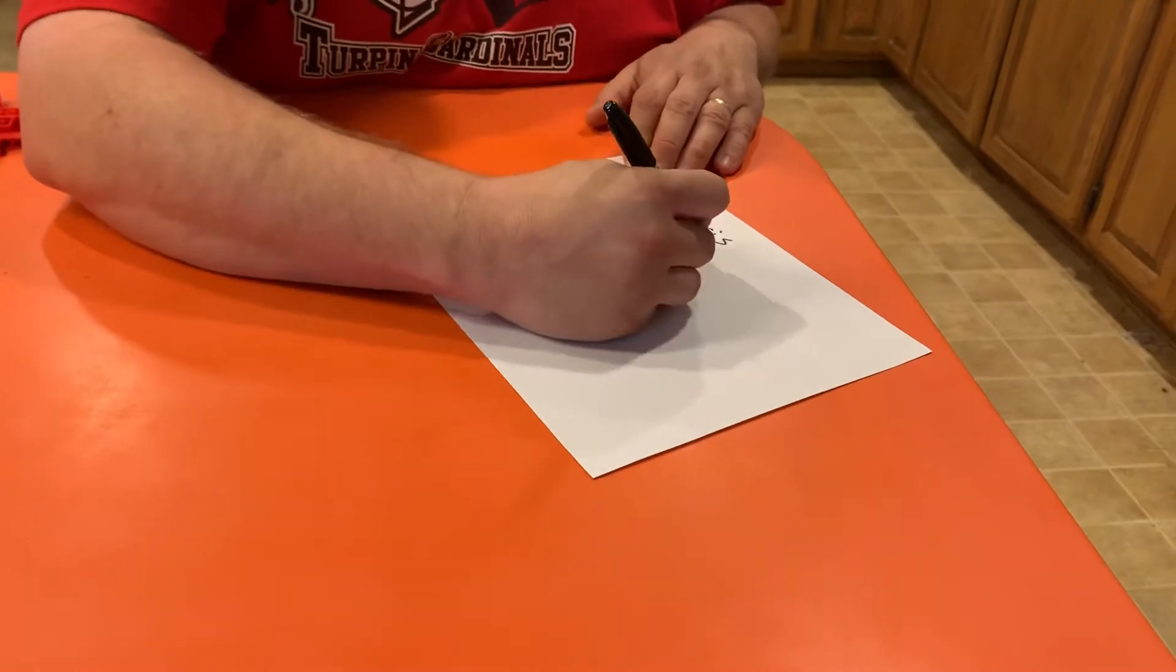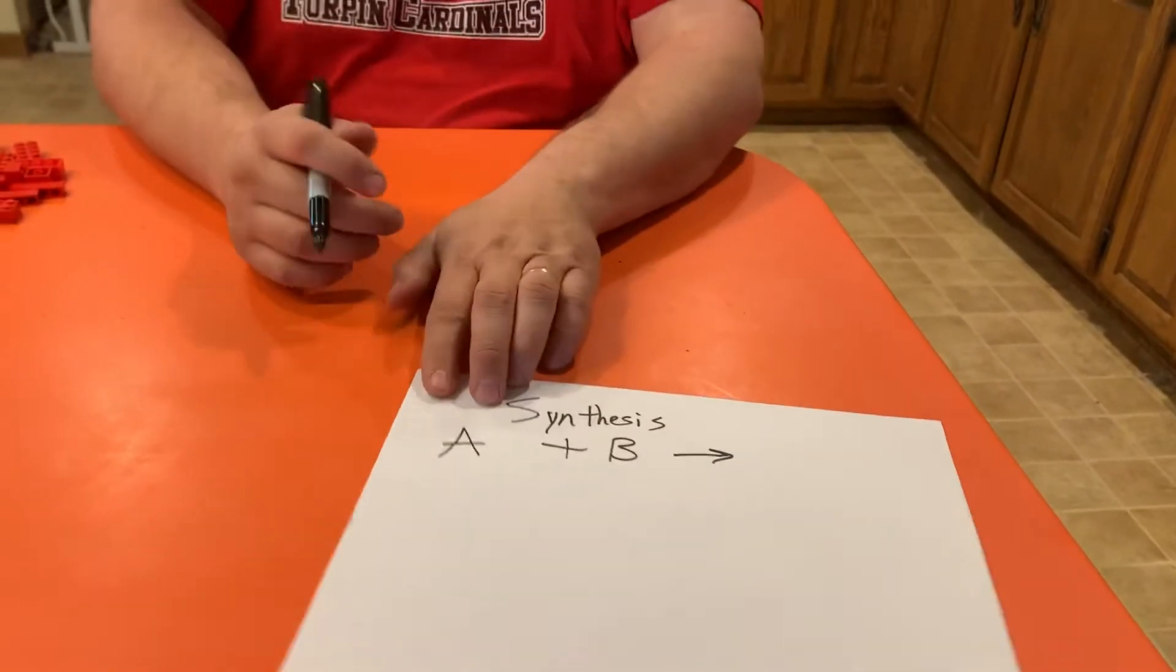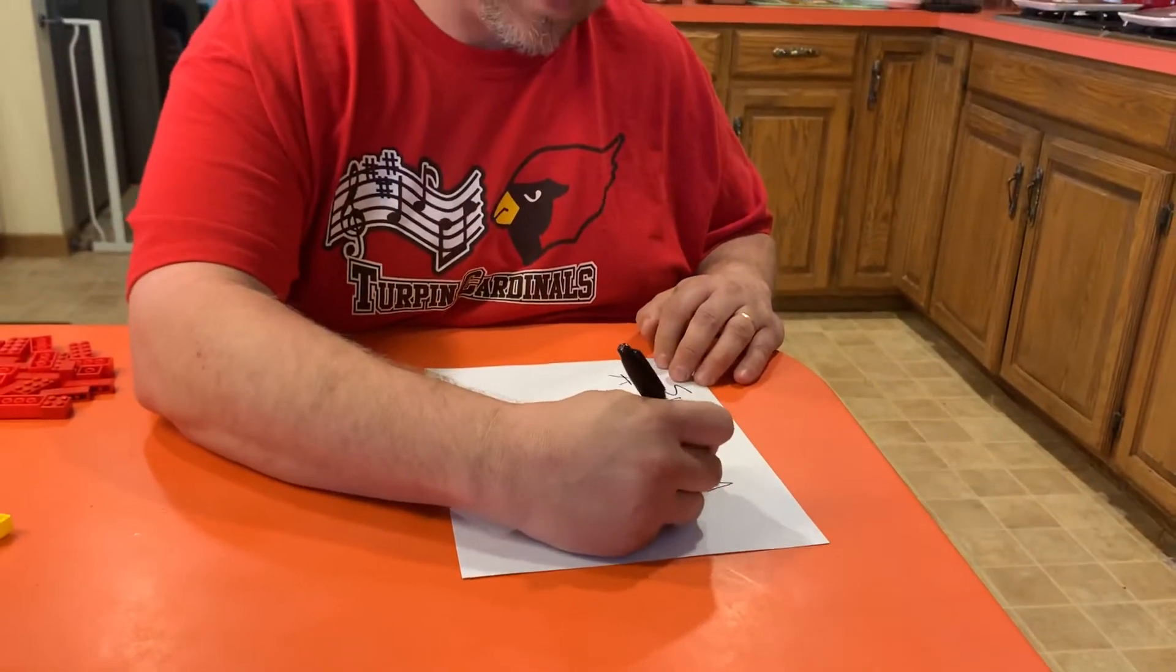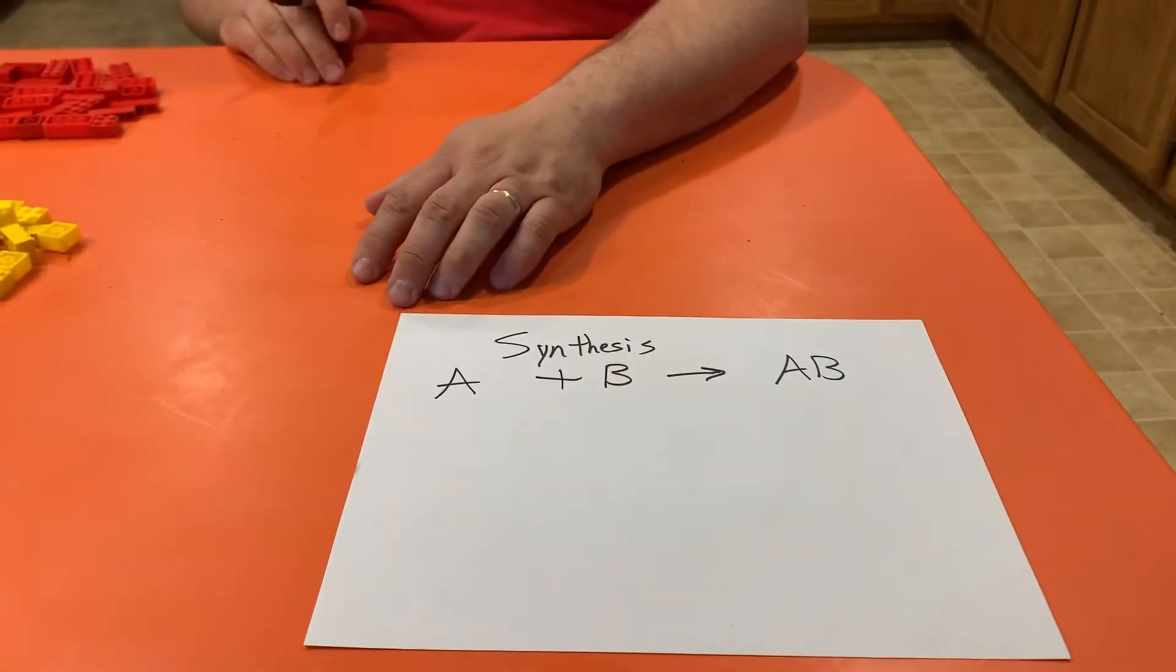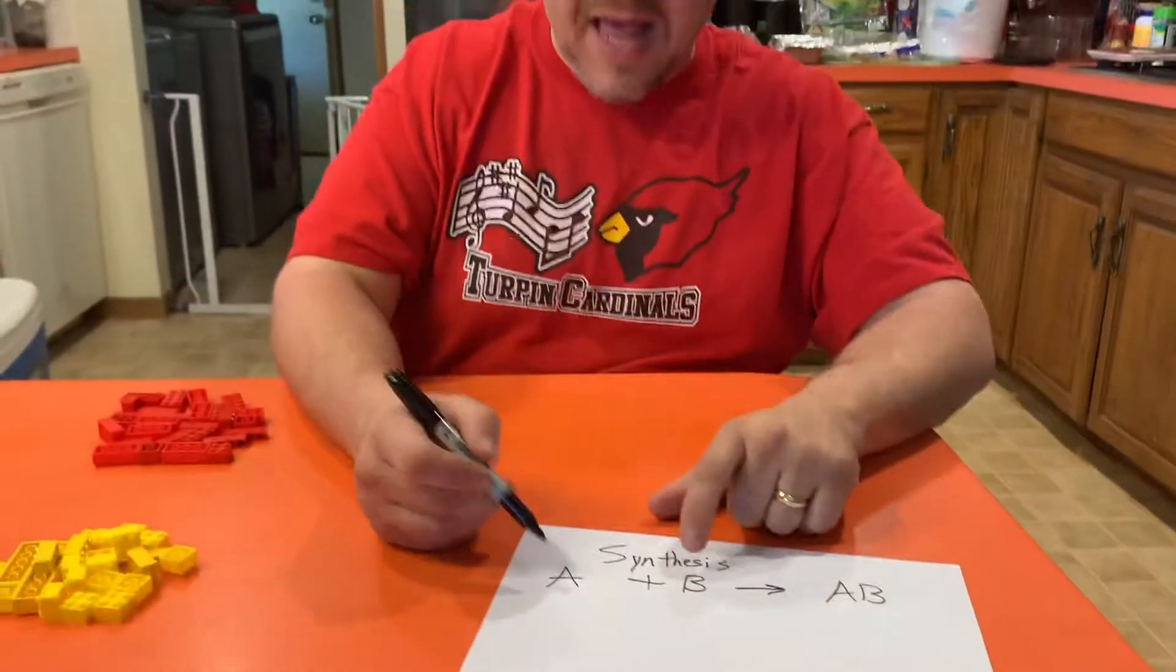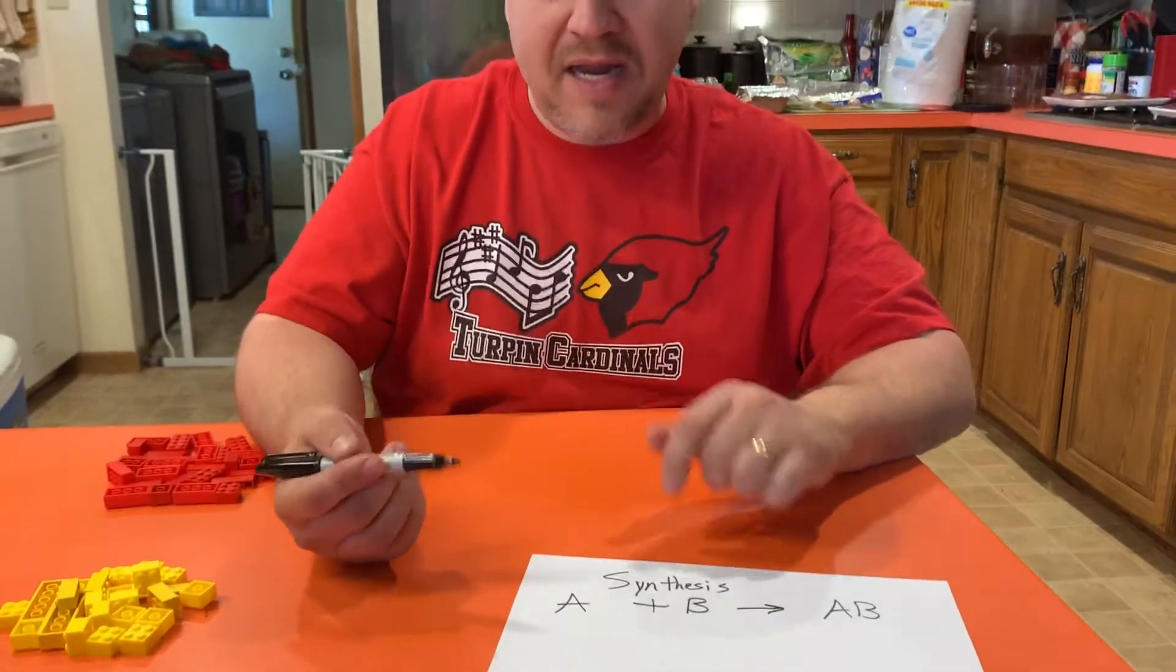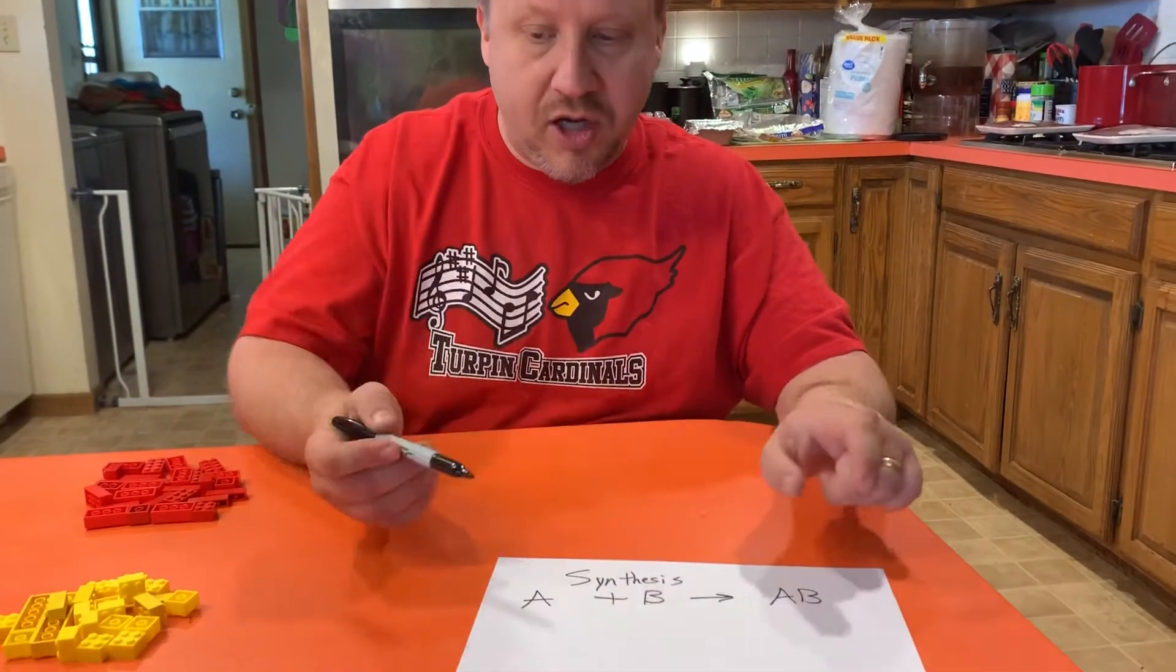Alright, now A and B can be anything, it can be any element, but it has to be two things that are gonna go together. Now for doing this reaction we're going to use Legos.